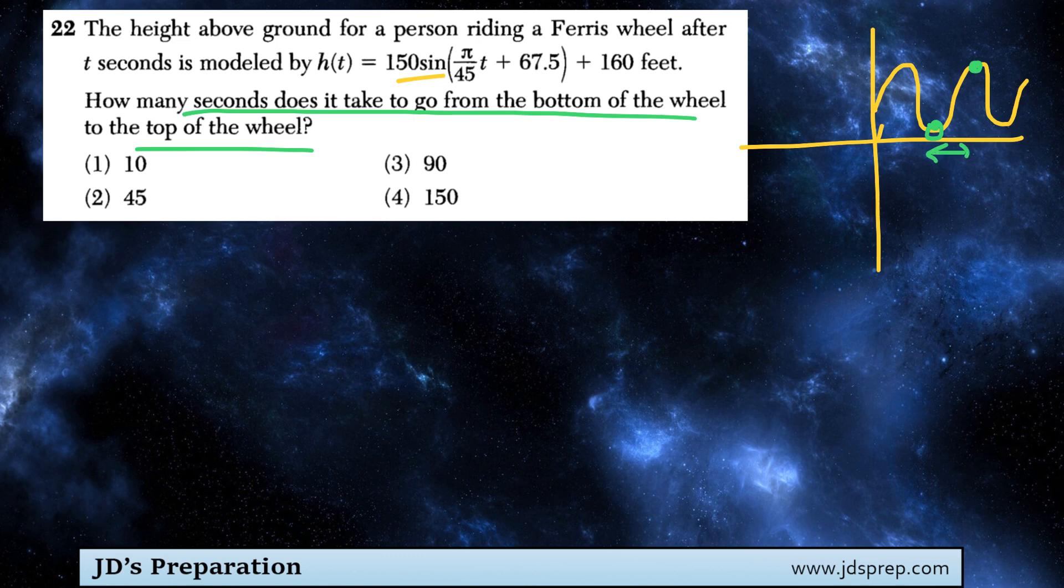To help us figure that out, we can find the period, because the period is the distance from here to here. So what we're trying to find, the time it takes to get from the bottom of the Ferris wheel to the top, would be half of the period.